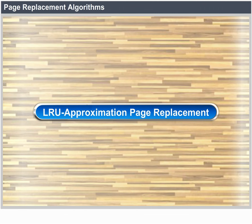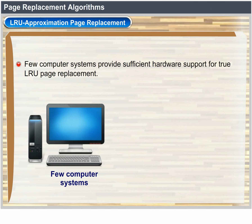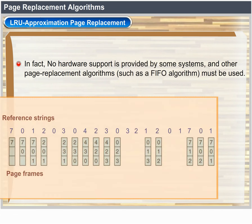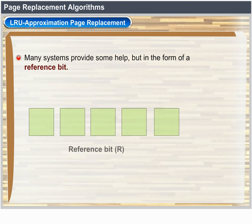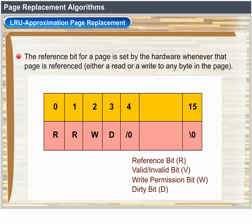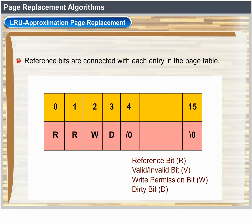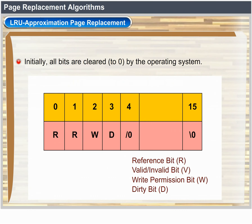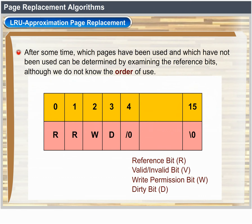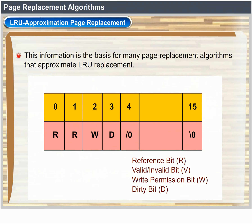LRU approximation page replacement. Few computer systems provide sufficient hardware support for true LRU page replacement. Some systems provide no hardware support and other algorithms such as FIFO must be used. Many systems provide some help, however, in the form of a reference bit. The reference bit for a page is set by the hardware whenever that page is referenced — either a read or a write to any byte in the page. Reference bits are associated with every entry in the page table. Initially all bits are cleared to 0. As a user process executes, the bit associated with each page referenced is set to 1 by the hardware. This information is the basis for many algorithms that approximate LRU replacement.